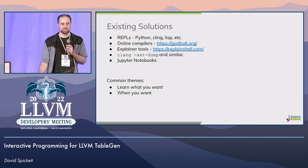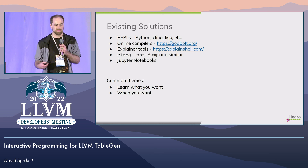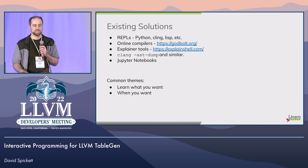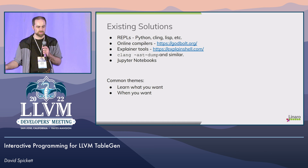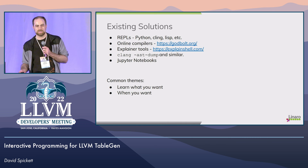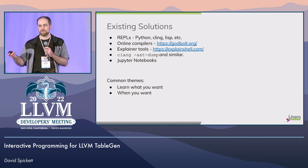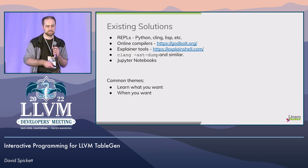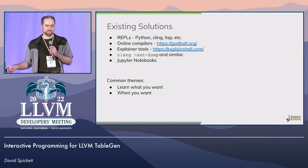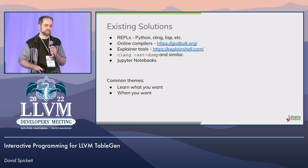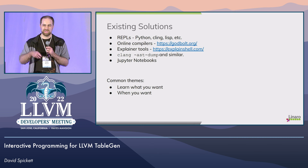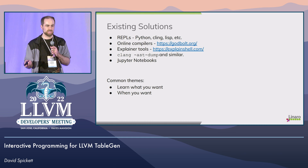Existing solutions in other languages: you've got interactive prompts like in Python, C++ with Cling, and Lisp has had this forever. Online compilers — we all know Compiler Explorer. We have websites that can break down shell commands, things like that. Clang has a bunch of options that can dump out the internal state as it's doing things. And something I found in other communities is Jupyter Notebooks. The common thing with all these is you can learn what you want, when you want, without asking anybody's permission or having them write you a new tutorial.